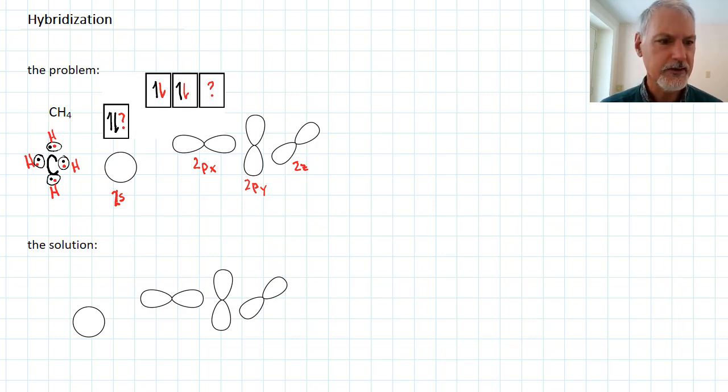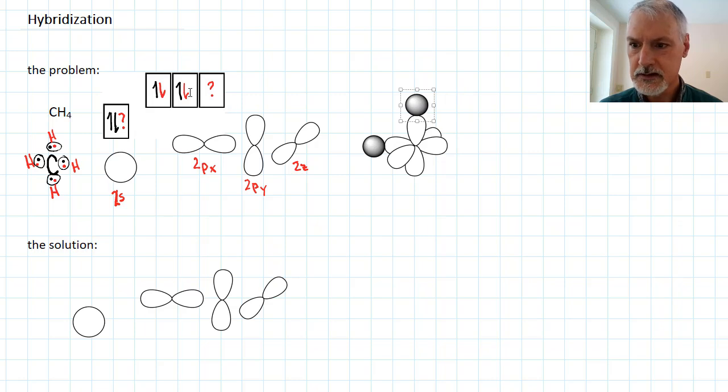So what we have essentially then, if we look at it diagrammatically, here are our p electrons. We can account for perhaps bonding in two of the cases. One of the cases here with the 2px orbital. So I'll put that hydrogen there. And we can get some bonding with the 2py orbital here.